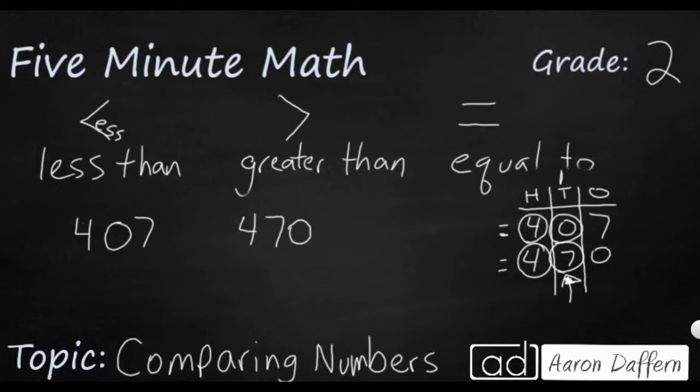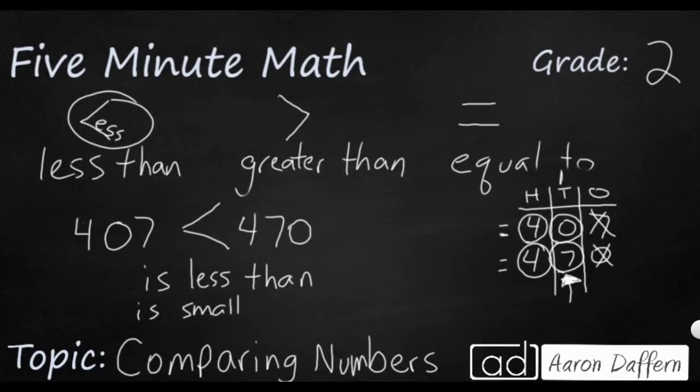It really doesn't matter if you look at the ones place that the zero is smaller than the seven. Once you've figured out which one is bigger in the place value, it doesn't matter if the digits to the right are smaller or larger. So 470 is my larger number. We need to make the opening always go to the larger number. So we would read 407 is less than 470, because this is the less than symbol facing the right. We can say is smaller than if you wanted to.